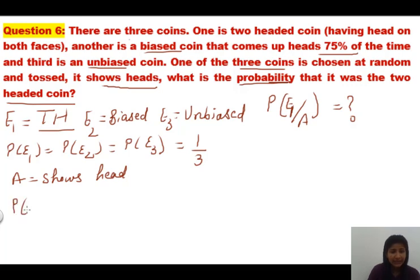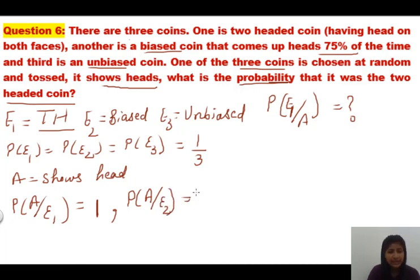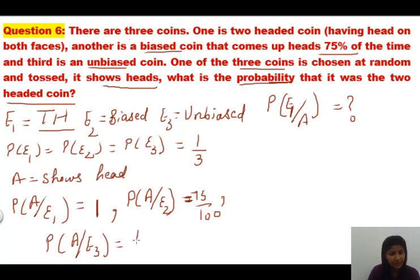Let us write all three possible cases. Suppose you select the first coin which is two-headed — the probability of showing head is 1, because it is a sure event. The second case, E2, is a biased coin that comes up heads 75% of the time, so P(A|E2) = 75/100. The third case, E3, is an unbiased coin, so P(A|E3) = 1/2.